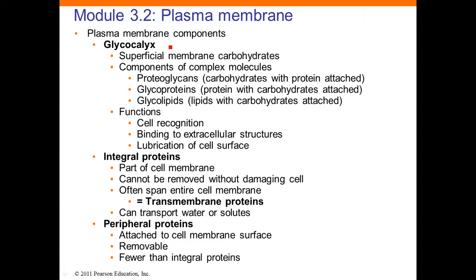The components of the plasma membrane include the glycocalyx, made of carbohydrates mixed with various other molecules. The glycocalyx is involved in cell recognition — how one cell in your body recognizes other cells. For example, muscle cells need to know they're with other muscle cells and not find themselves in a collection of bone cells. There are also integral proteins that are part of the cell membrane — some are only on part of the membrane, others span the whole membrane.